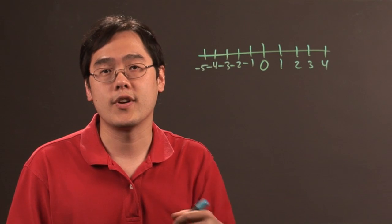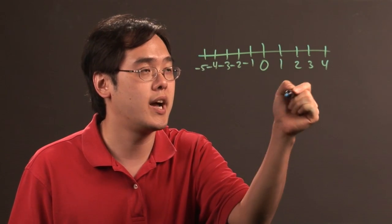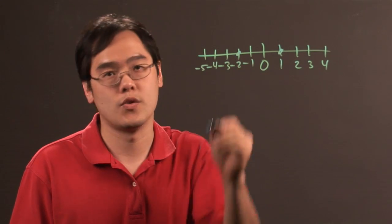So, when you're graphing those, all you have to do is figure out where your numbers lie. So, if you're graphing one, it's over here, negative two is over here.